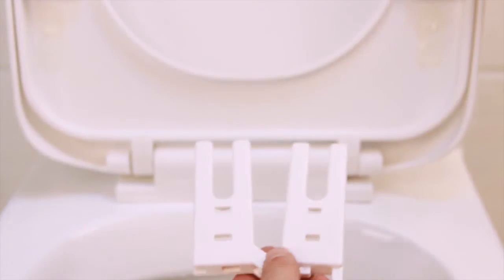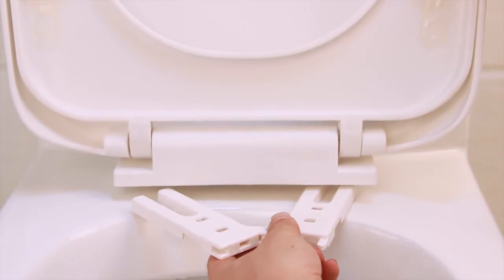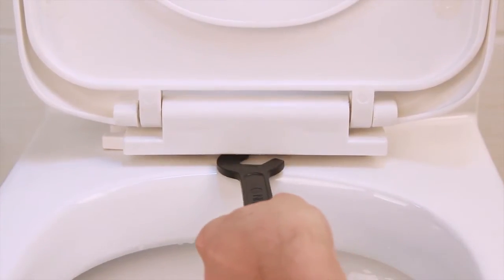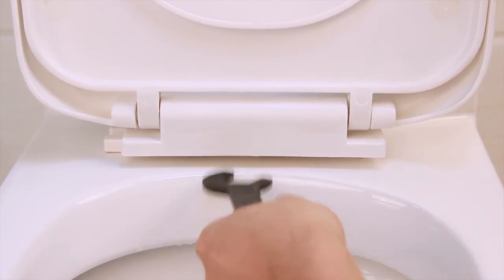Open the bidet mounting plate. Aim the two U-shaped prongs at the bolts which have been loosened. Push the mounting plate forward until you hear a snap. The mounting plate is now secure.